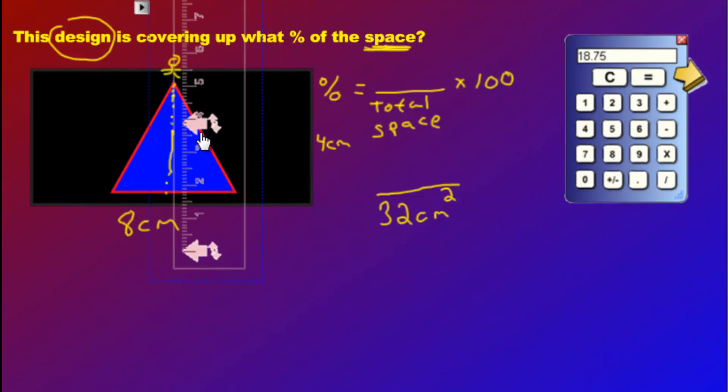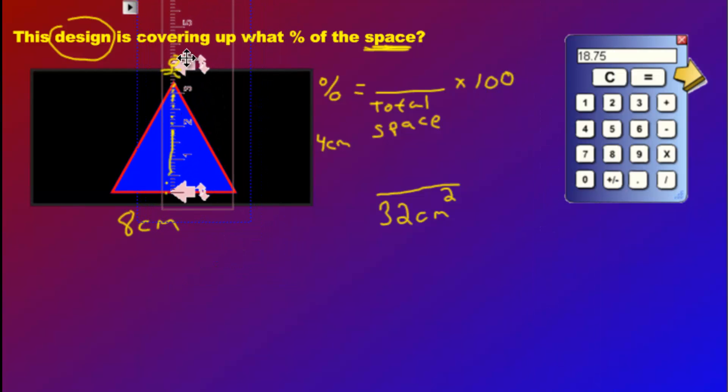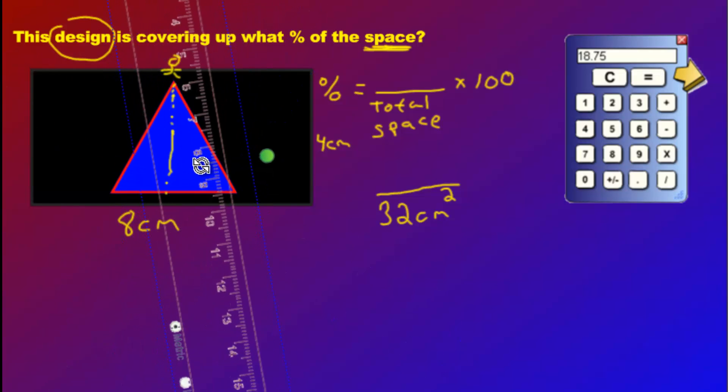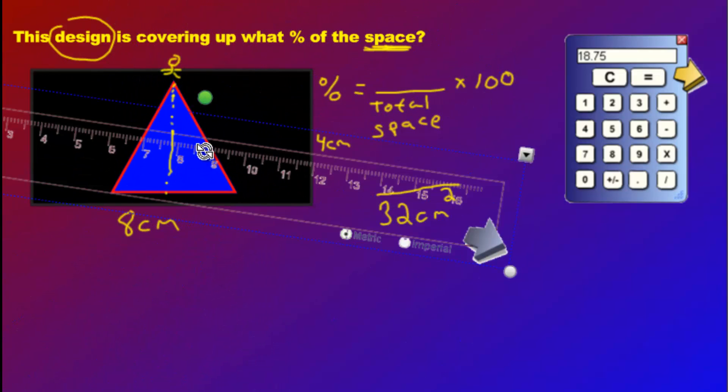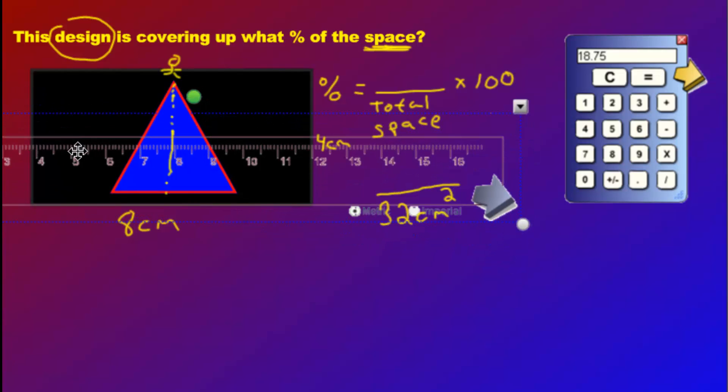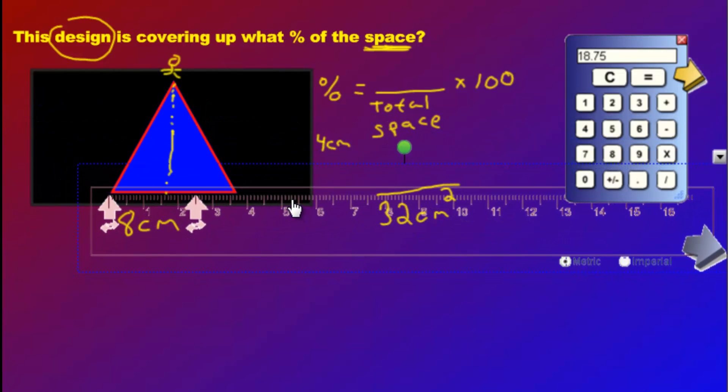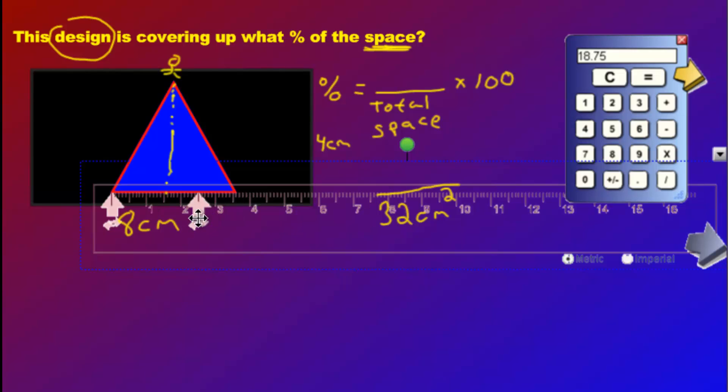From there to there. So you take your ruler, you measure that height, and it looks like it is 3 point, what is that? 3 point 1, 2, 3. Let's say 3 point 3. 3.3, and my base is going to be, base is pretty easy. You just, whatever the triangle is sitting on, sitting on this red line, and that's going to be, so we said 3 point 3 is the height, 3 point 5 is the base.